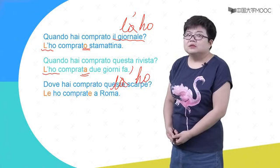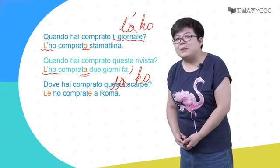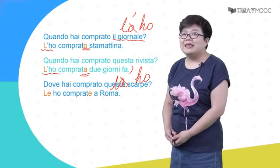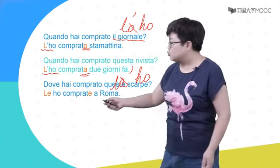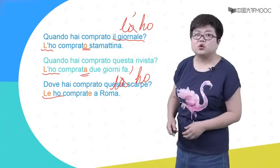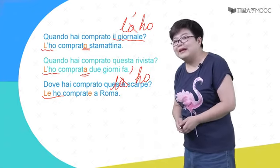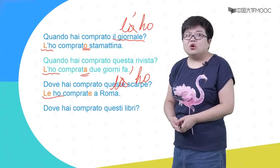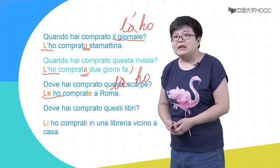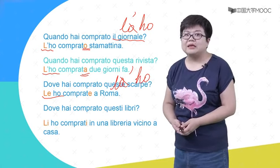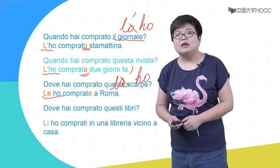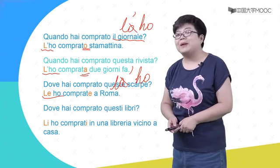Dove hai comprato queste scarpe? 你在哪买的这些鞋呀？鞋我们知道是阴性复数，所以我们看：Le ho comprate a Roma, 我在罗马买的。Dove hai comprato questi libri? 这些书你在哪买的呀？Li ho comprati in una libreria vicino a casa. 我在离我家挺近的一个书店买的。Le/Li跟后面的comprate/comprati，我们一定要做到性数的配合。